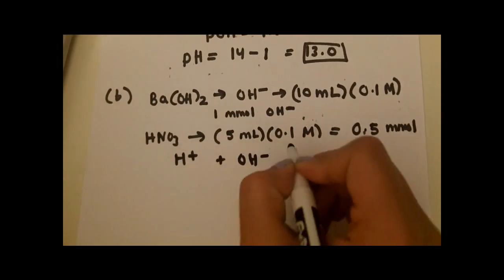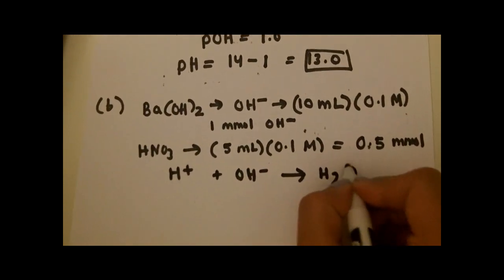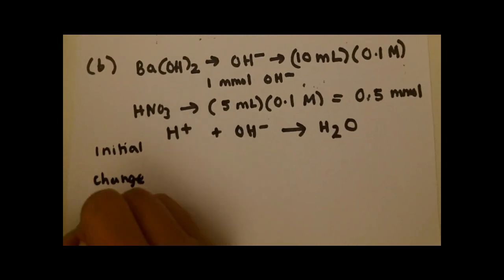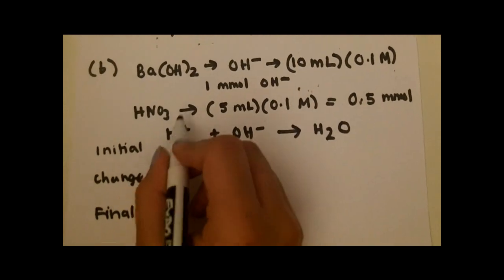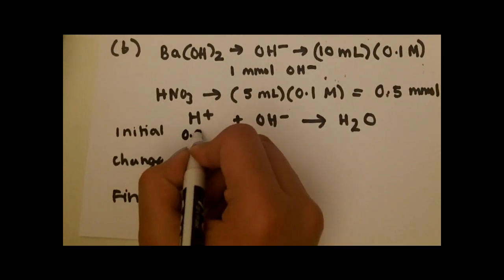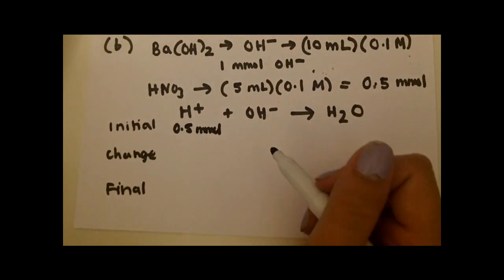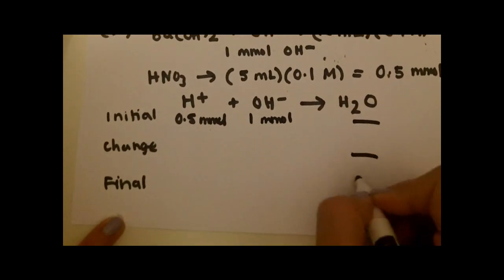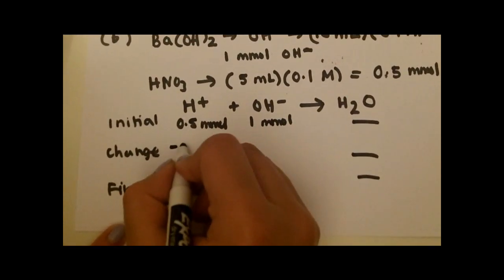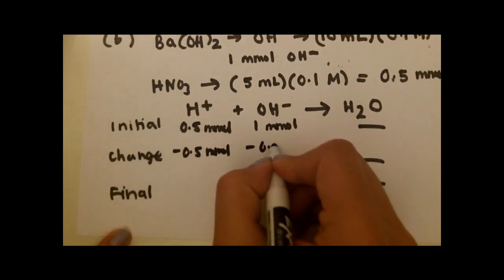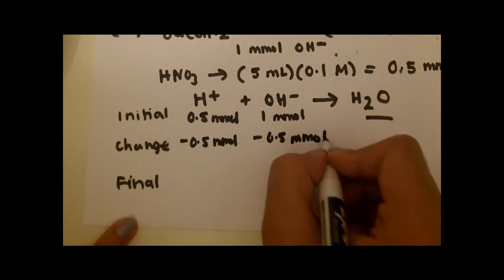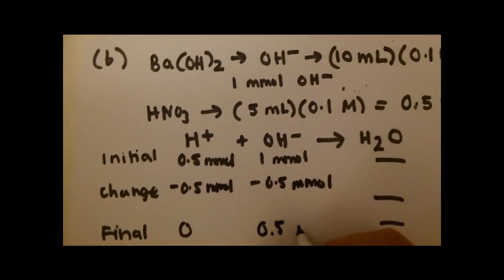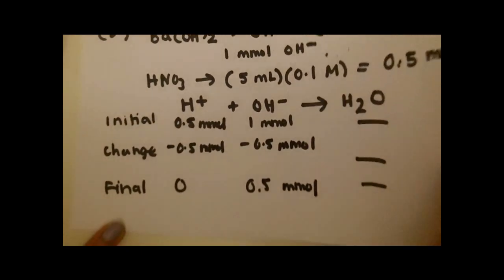Let's write the net ionic equation with initial, change, and final rows. Initial H⁺ is 0.5 millimoles and hydroxide is 1 millimole. Water we don't care about. We subtract whichever is the limiting amount. So we get 0 H⁺ remaining and 0.5 millimoles of OH⁻ left over.